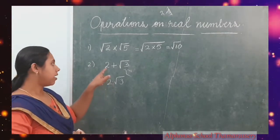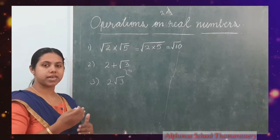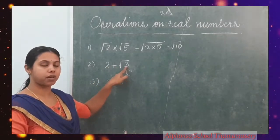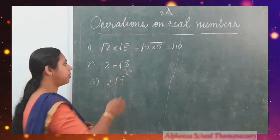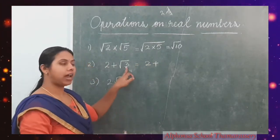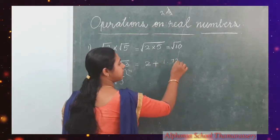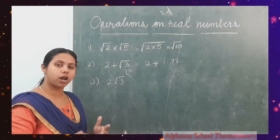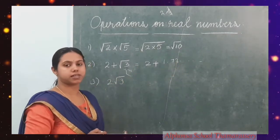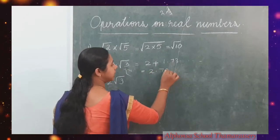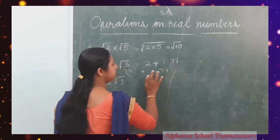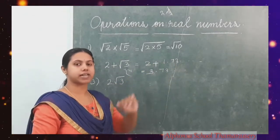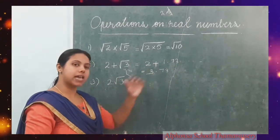Root 10 is an irrational number. If you add a rational and irrational number — 2 is a rational number, root 3 is an irrational number — the sum of these two terms will be equal to 2 plus the value of root 3, which is 1.73 etc. It's non-terminating, non-recurring decimal expansion. So you are getting 2 plus 1.73 etc., which is equal to 3.73 etc. That means it's an irrational number.